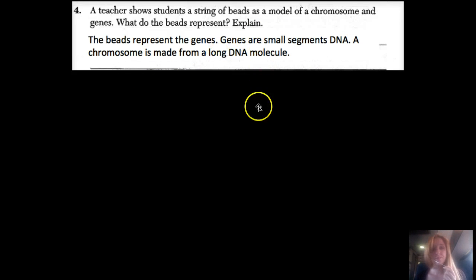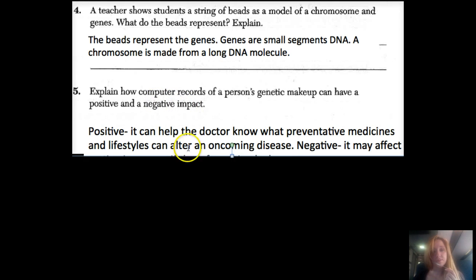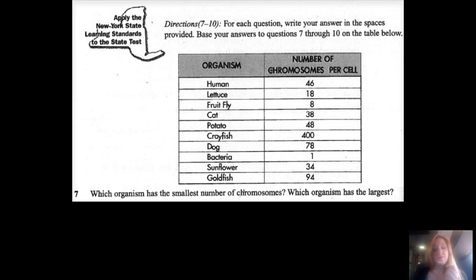Number five: Explain how computer records of a person's genetic makeup can have a positive and negative impact. Positive: It can help doctors know what preventive medicines and lifestyles can alter oncoming disease. Negative: It may affect getting insurance if the information leaks out. There's this whole movie called Gattaca—I highly recommend you watch it. It's about people starting to discriminate based off of DNA in the future. Everyone knows each other's genome or DNA sequence, and they discriminate against you if you have genes that could be responsible for certain diseases.